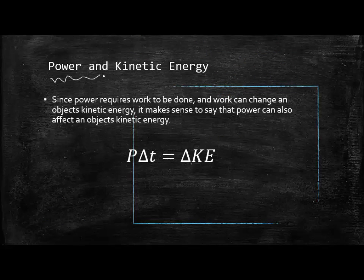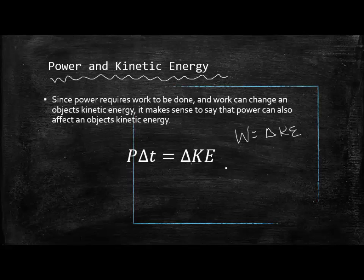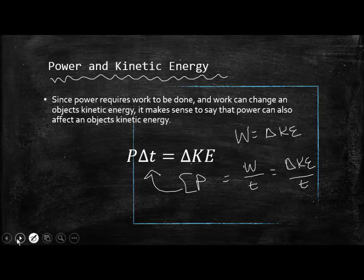Let's talk about this idea of power and kinetic energy. The last section, we talked about how work is equal to change in kinetic energy. But work over time is going to give us power, so if we divided both of these by time, we would get power. So, another way to talk about power is to say that power times time will give you an object's change in kinetic energy. It's just another way to talk about the fact that you're doing work in a certain amount of time. And that work, whatever it is that you're doing, is going to change the object's kinetic energy.